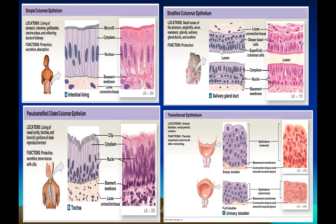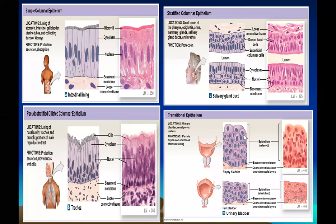Stratified columnar epithelium has more than one layer of columnar cells, found in the pharynx, epiglottis, anus, mammary glands, salivary glands, and urethra — function is protection. Transitional epithelium is found in areas that need to enlarge, like the urinary bladder. In an empty bladder the cells are dome-shaped; as the bladder fills, the cells flatten out. It is found in the urinary bladder, the pelvis of the kidneys, and the ureter, permitting expansion, stretching, and recoiling.